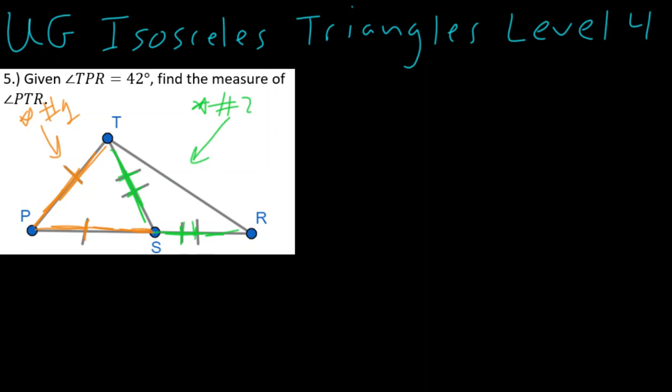Now, this also says find the measure of PTR. So let's see, P to T to R. So we're looking for this angle way over here. And so what they want to do in this problem is they want to give you T to P to R. They give you this initial angle is 42. And notice, what do we call this angle? Well, this is our vertex angle.